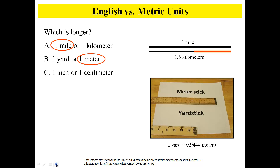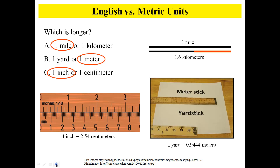For a yard or a meter, the meter stick is longer — a meter is about 39 inches. For 1 inch or 1 centimeter, 1 inch is 2.54 centimeters.